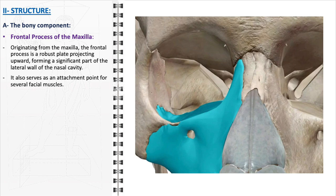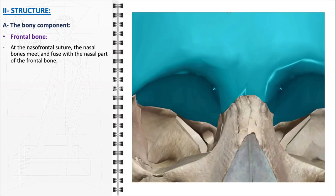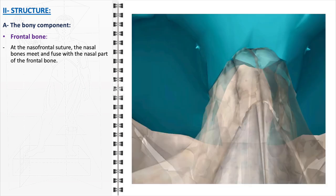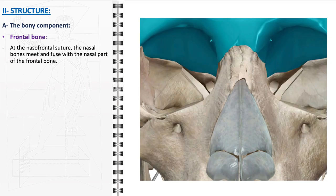The frontal process of the maxilla serves a dual role in providing structural support and serving as a muscle attachment point, highlighting the multifaceted nature of nasal anatomy. Additionally, the frontal bone contributes to the nasal pyramid: at the naso-frontal suture, the nasal bones meet and fuse with the nasal part of the frontal bone. This suture is located where the upper nasal structure connects with the forehead, defining the upper limit and contour of the nose and contributing to the formation of the root of the nose.